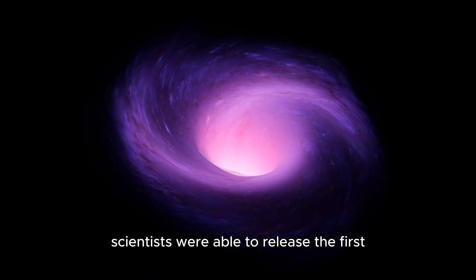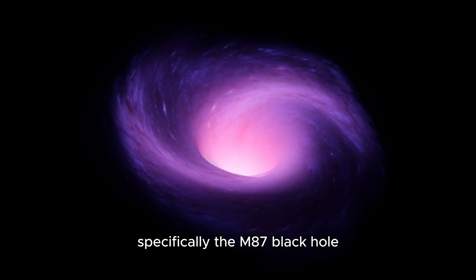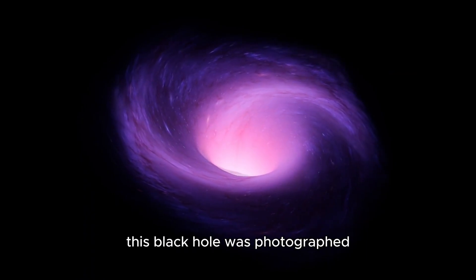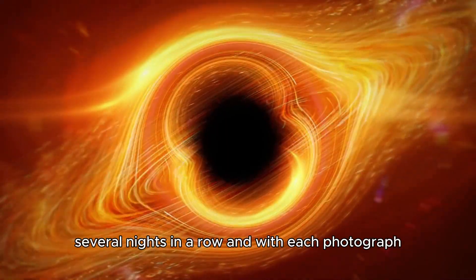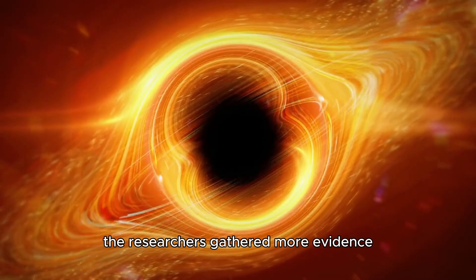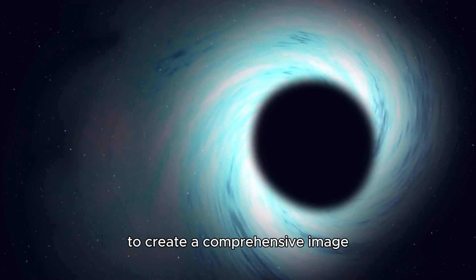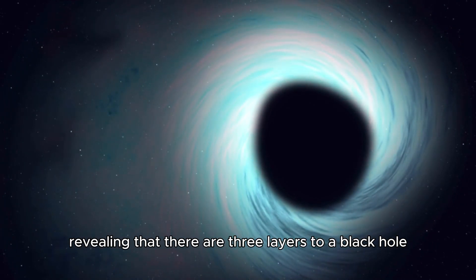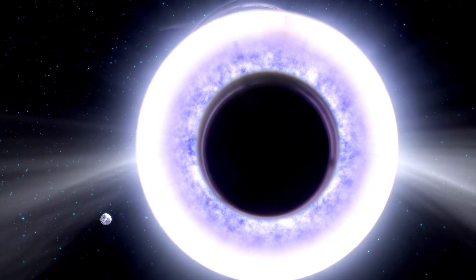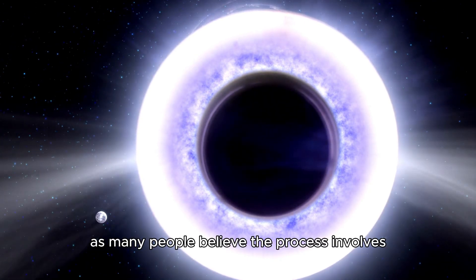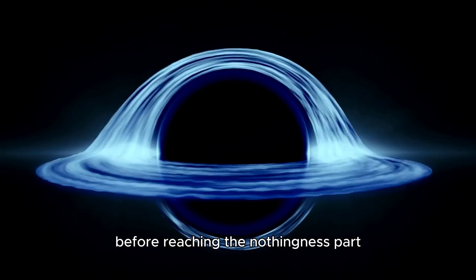In 2021, scientists were able to release the first clear photograph of a black hole, specifically the M87 black hole. This black hole was photographed several nights in a row, and with each photograph, the researchers gathered more evidence. They had to stitch the individual photos together to create a comprehensive image revealing that there are three layers to a black hole. It's not just one single gaping hole of nothingness, as many people believe. The process involves making it through the first two layers before reaching the nothingness part.